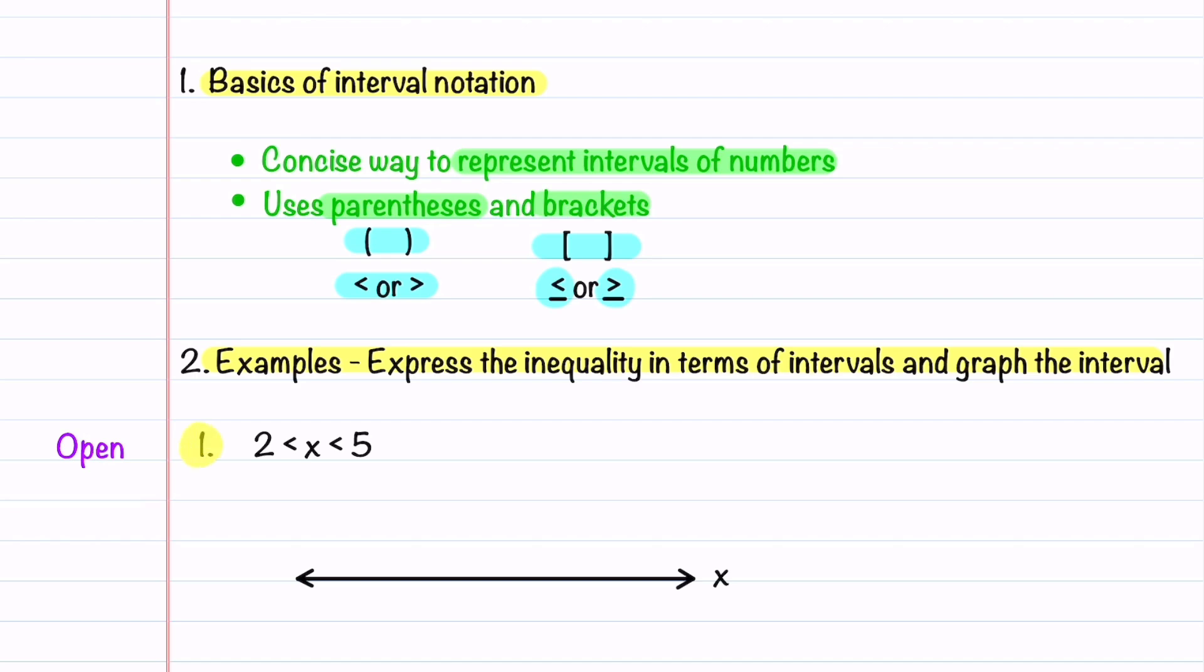Our first example is an open interval example. Our inequality tells us that x is all real numbers between 2 and 5, not including 2 and 5. Because we have less than symbols, the way to write this inequality in interval notation is like this: we have a parenthesis, 2 comma 5, and then we add another parenthesis.